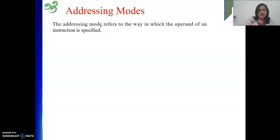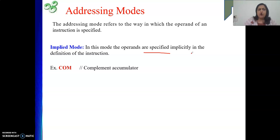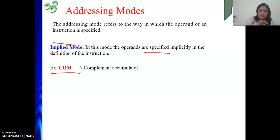Starting with the first one: implied mode. In implied mode, operands are specified implicitly — when we see the opcode, we know where our operand is. The operand is specified as part of the instruction itself. For example, the instruction COM: looking at COM, we know where our operand is with no need to specify any other operand. Implied means it is understood — looking at the opcode, we understand where our operand is.